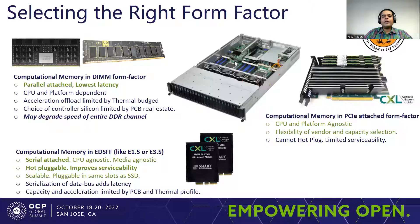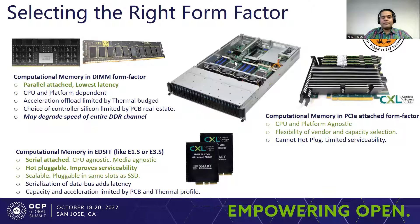Computational memory devices can take many physical form factors, and choosing the right form factor is very critical for scalability. Starting from the left-hand side, we have the DIMM type of form factor. The DIMM form factor offers the lowest latency, but it is CPU and platform dependent because of the parallel interface through which it is connected to the processor bus. Also, acceleration offload on a DIMM-based form factor can be limited by its thermal budget, and PCB real estate is very constrained. The biggest challenge of DIMM form factor comes from the loading of the parallel bus, because a slow-running DIMM may bring down the speed of the entire memory channel, thereby degrading system performance.